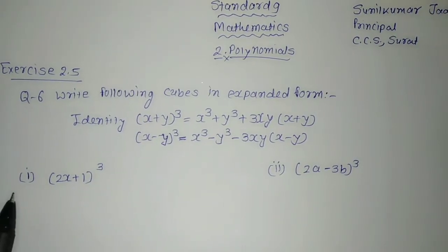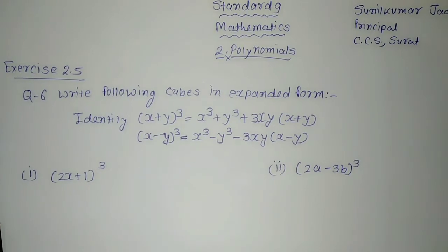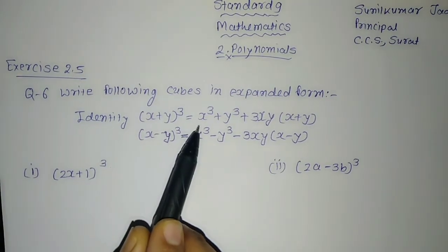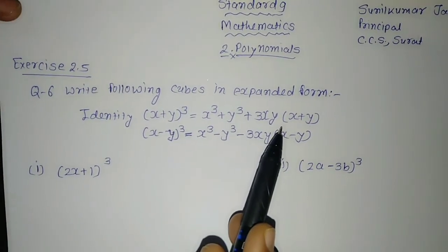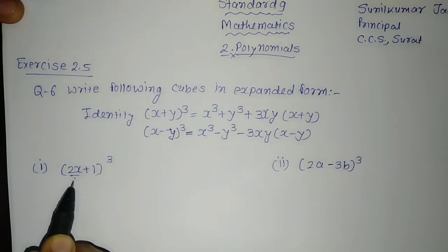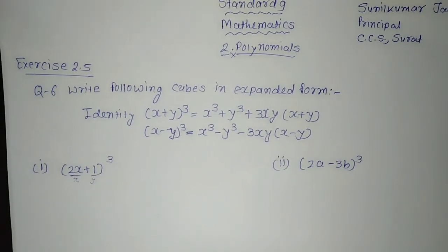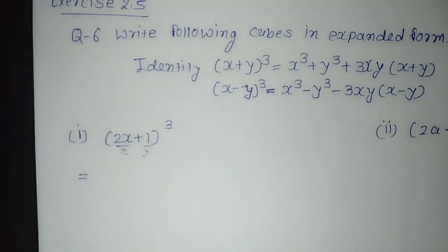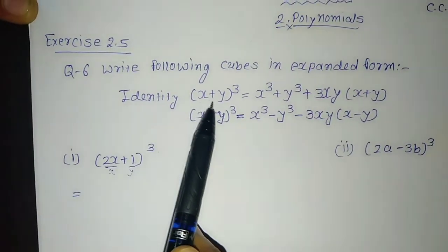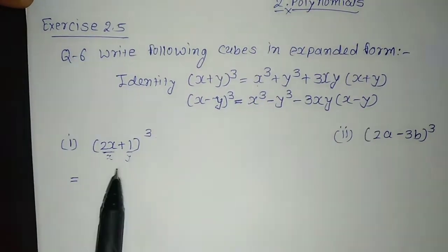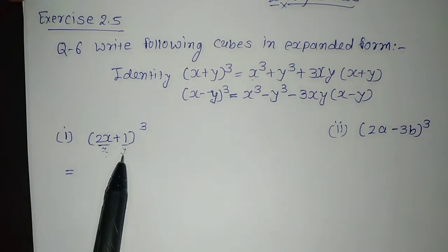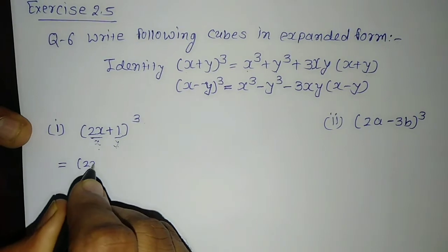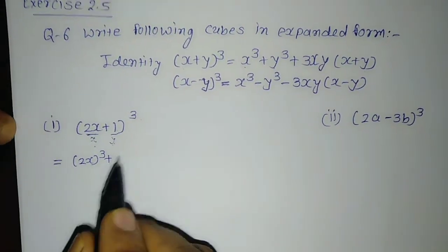Let us begin with question number one, that is (2x + 1) whole cube. The formula or identity is: x plus y whole cube is equal to x cube plus y cube plus 3xy times bracket x plus y. We will consider 2x as x of the formula and 1 as y. So the formula gives us x cube plus y cube — writing (2x) cube plus (1) cube.